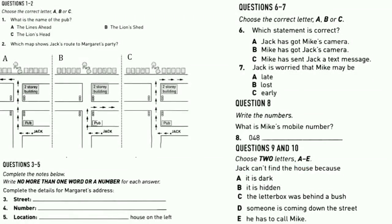Jack is on his way to Margaret's house party. He is phoning her for directions. First, you will have some time to look at questions 1 to 5. You will see that there is an example which has been done for you. On this occasion only, the conversation relating to this will be repeated.